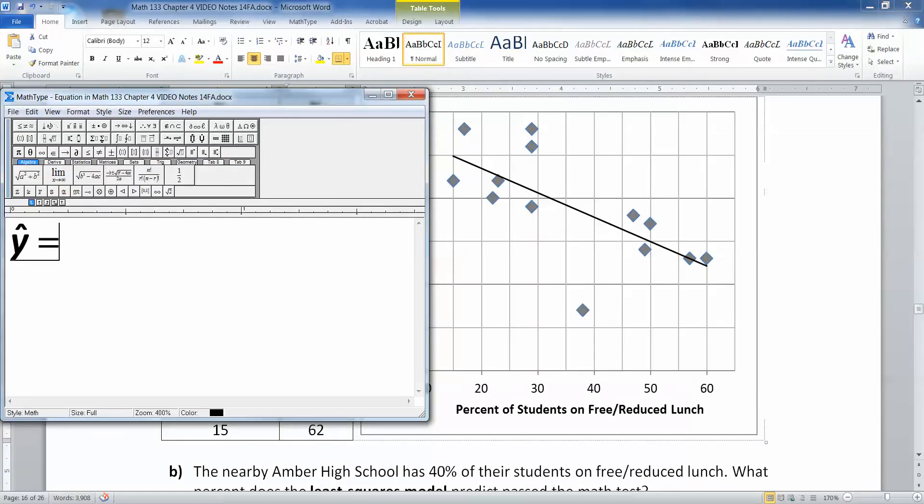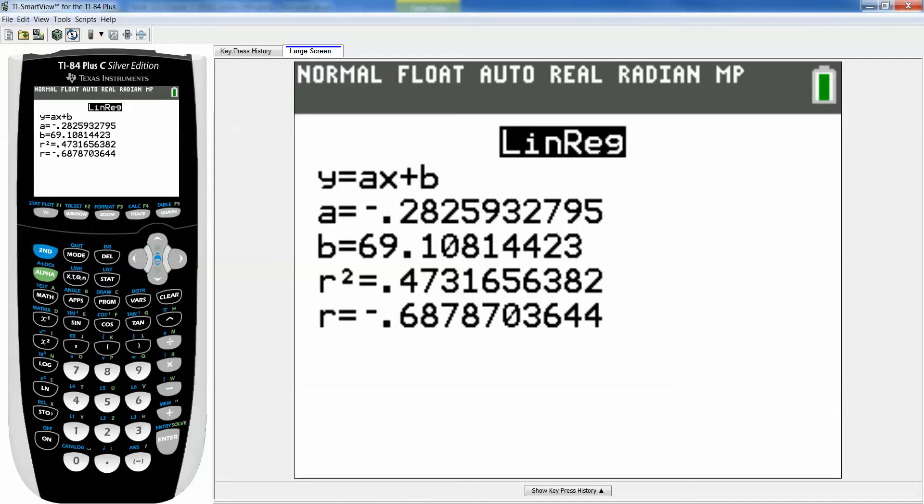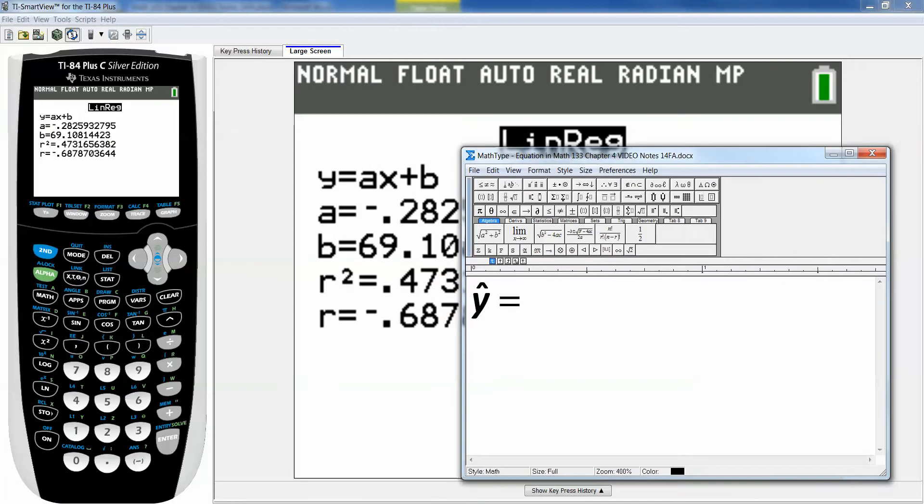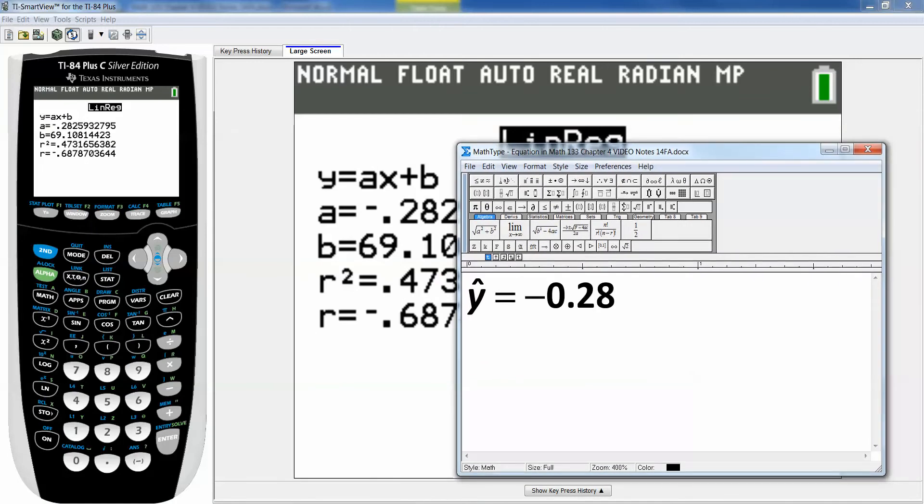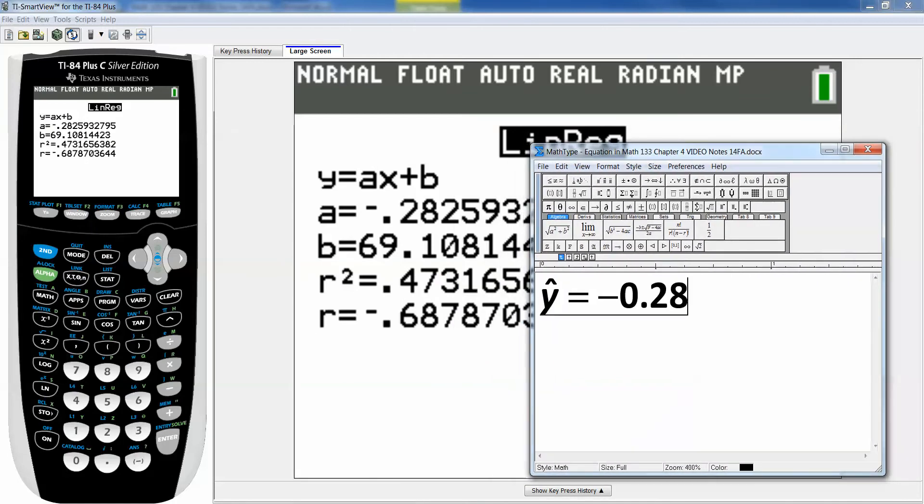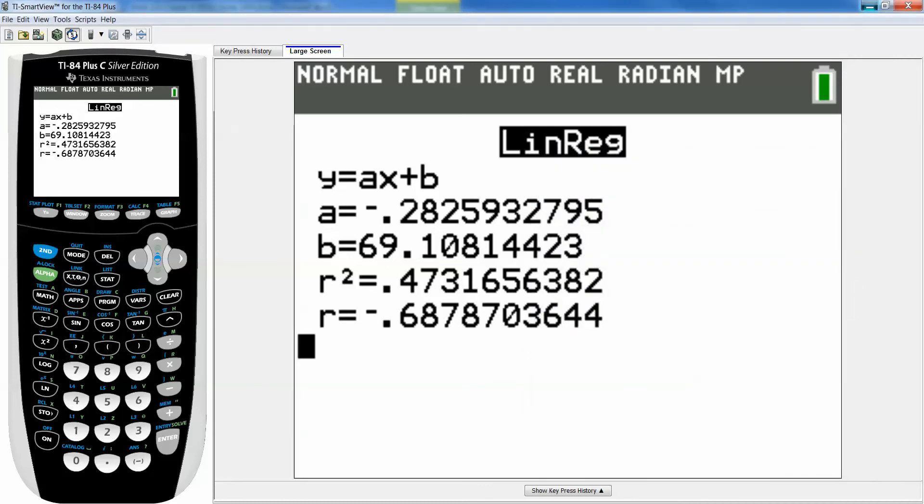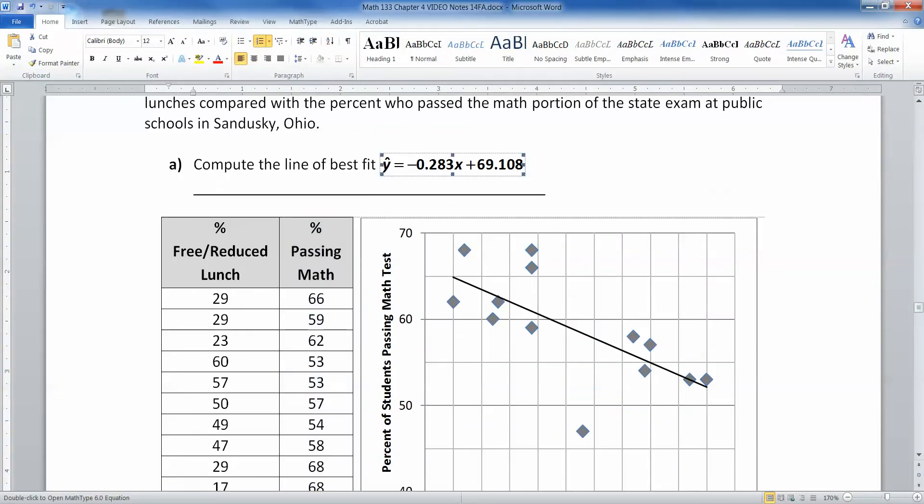And then I can't remember the numbers. So Y equals negative 0.283X plus 69.108. That'll work. You could do four decimal places or three. I wouldn't do much less than that. Maybe two, but even that would be pushing it a little bit.